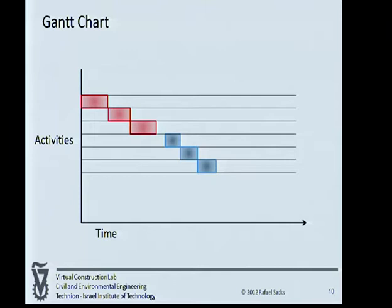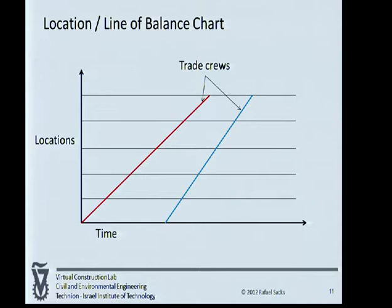Much of flow line and line-of-balance theory and practice was developed in Australia, so I'm not telling those familiar with it anything new. But I'll be using line-of-balance charts throughout the presentation. While your typical Gantt chart has activities and time across the bottom, the way I'll be presenting projects will have time across the bottom and locations up the side, so the work of teams is represented by lines that show the flow of teams through the project. I just wanted to put that as a frame of reference so some of the slides will be more understandable.